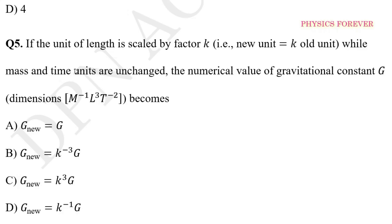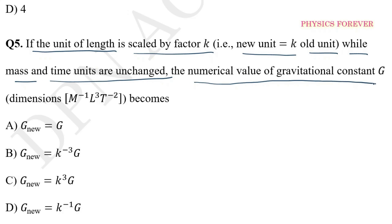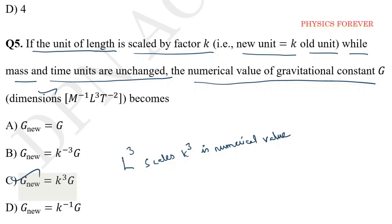Question number 5: If the unit of length is scaled by factor K — the new unit equals K times the old unit — while mass and time units are unchanged, the numerical value of gravitational constant G will change. G has dimensions L³, which scales by K³. So G_new equals K³ times G_old. The correct option is C.